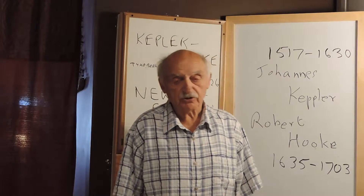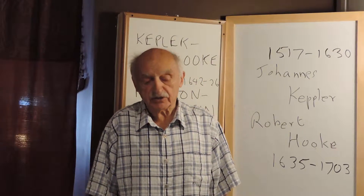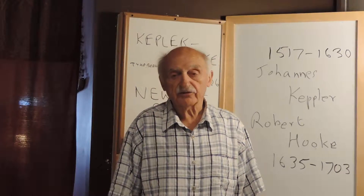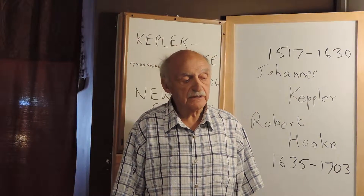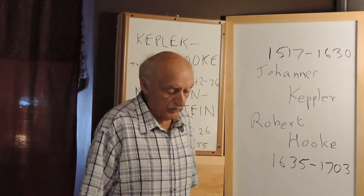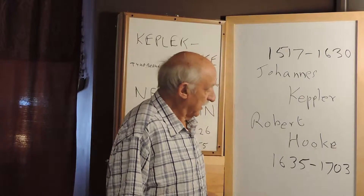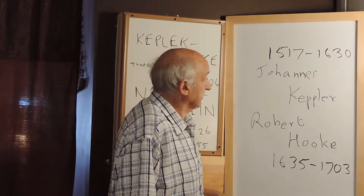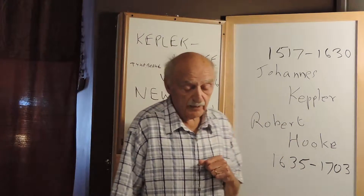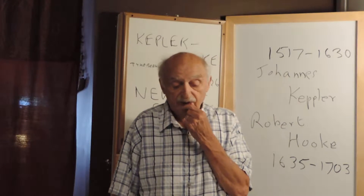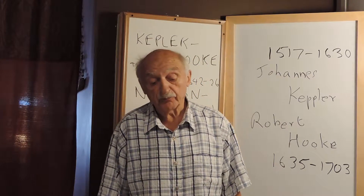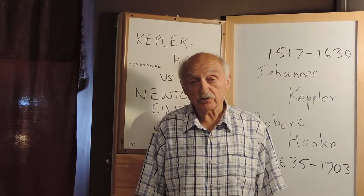Kepler took Brahe's information after Brahe died and derived some mathematical information, which is actually similar to what Robert Hooke did later — about a hundred years after Kepler died. Hooke was born and he was a British scientist, a friend or associate of Isaac Newton's.